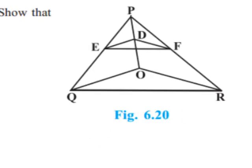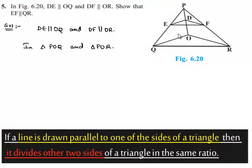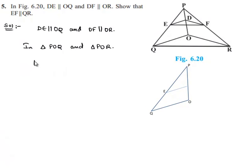In triangle POQ, applying the Basic Proportionality Theorem: since DE is parallel to OQ, the proportionality gives PE by EQ is equal to PD by DO. Let this be equation number 1.